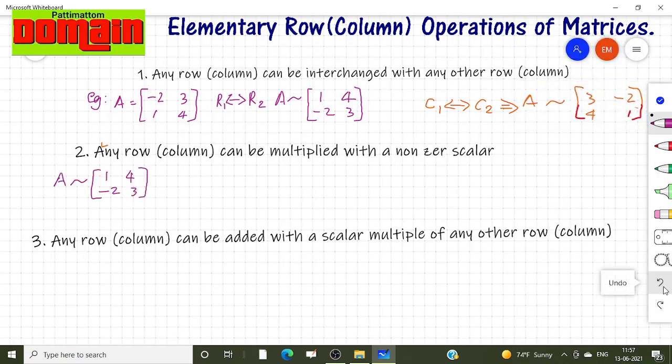Next property. Next elementary transformation allowed is like this. Any row or any column can be multiplied with a non-zero scalar.